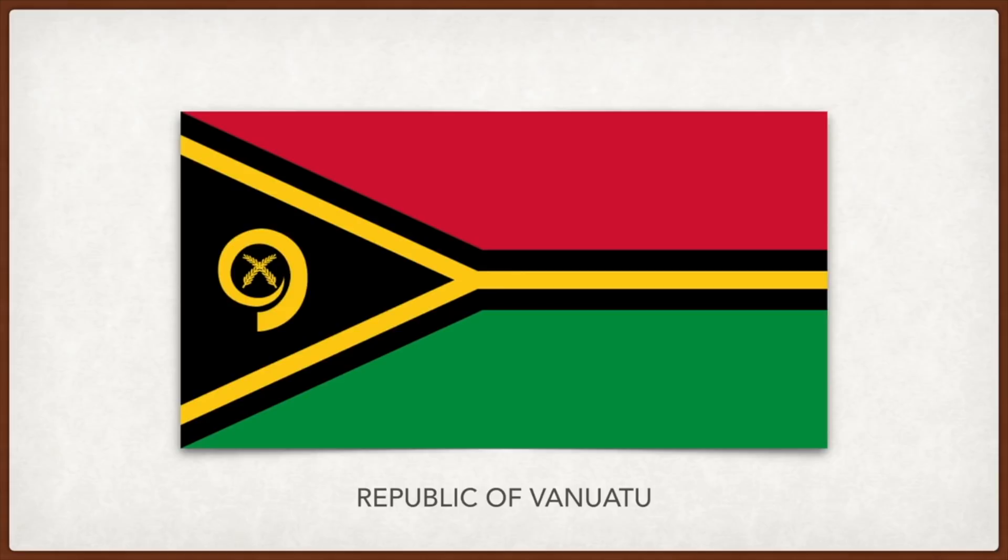Vanuatu: the black triangle represents the land and the people, the green is for the lush vegetation, and the red is for the sacrifice of pigs — a common religious ritual. The emblem on the black triangle depicts a pig's tusk encircling two crossed leaves representing the importance of the ritual. The yellow Y-shaped line suggests the layout of the islands of Vanuatu, and the yellow color represents peace and the light of Christianity spreading through the country.